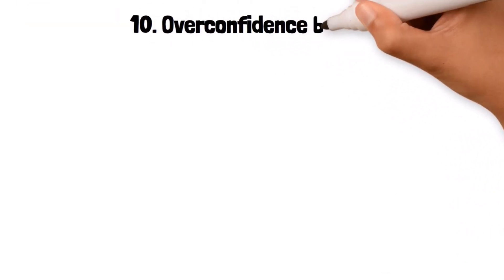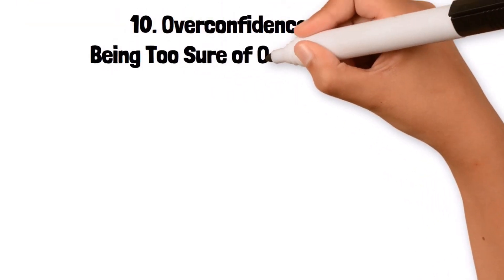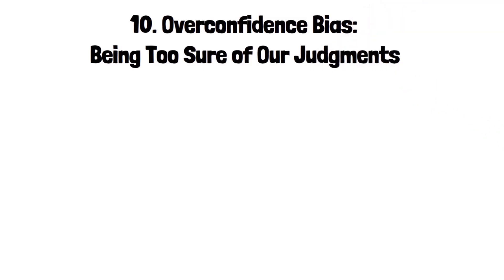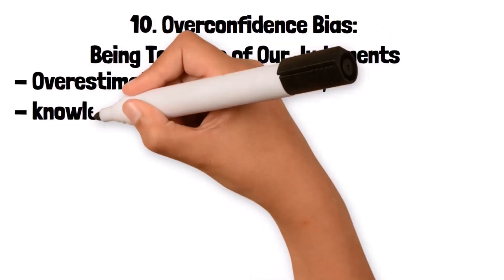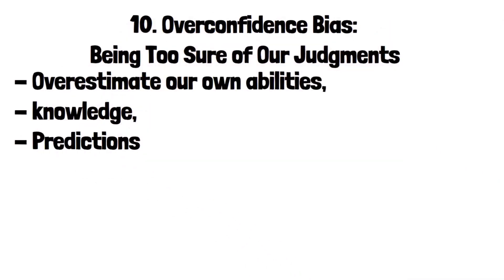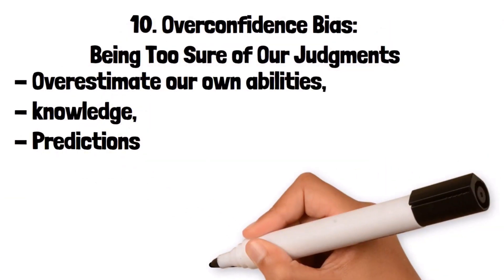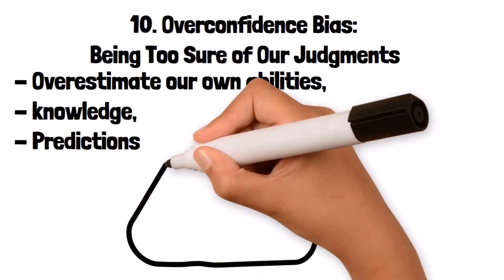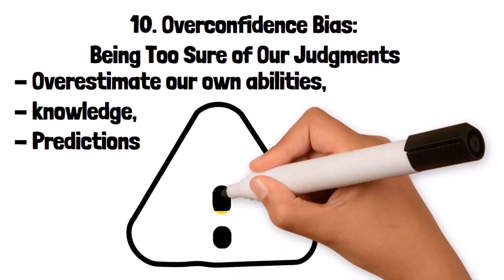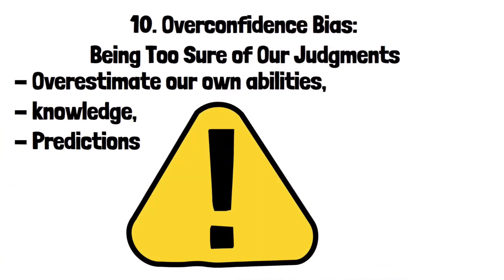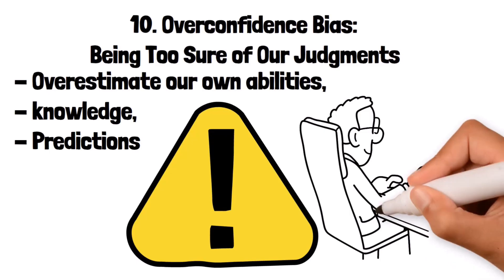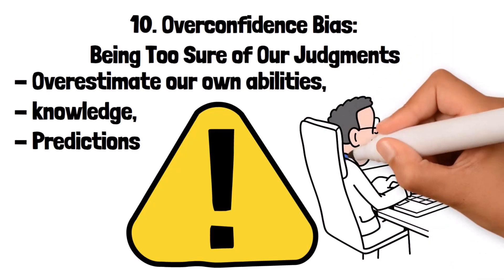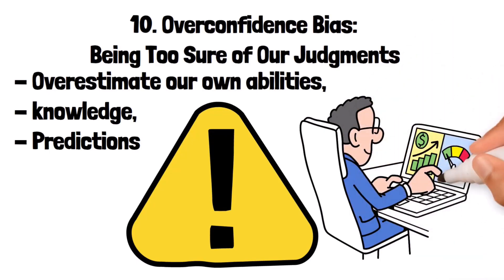10. Overconfidence Bias: being too sure of our judgments. Overconfidence bias is the tendency to overestimate our own abilities, knowledge, or predictions. This bias can lead to poor decision-making because it causes individuals to take on risks without fully considering the potential downsides. For example, an investor might be overconfident in their ability to pick stocks, leading them to make risky investments without sufficient research or caution.